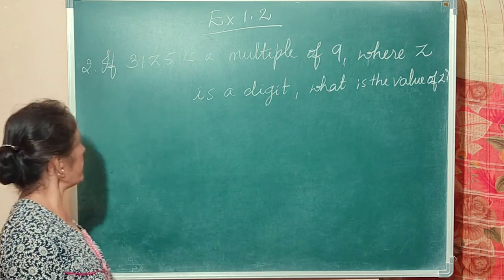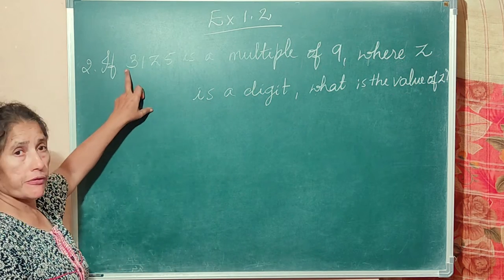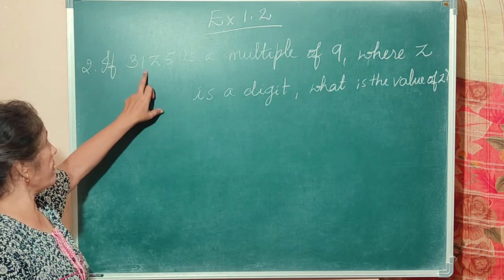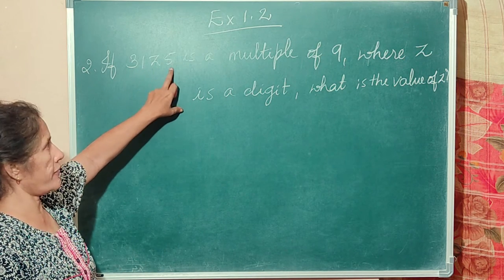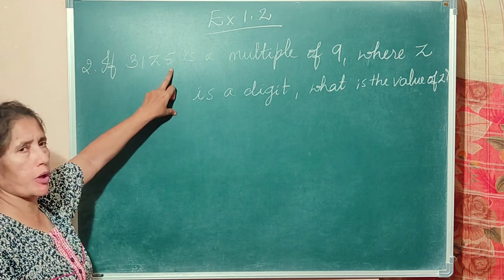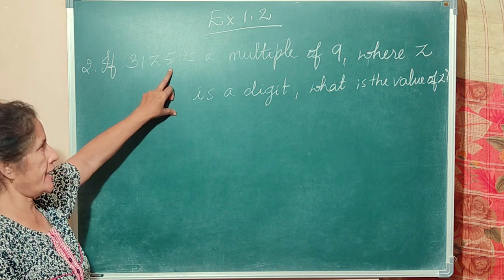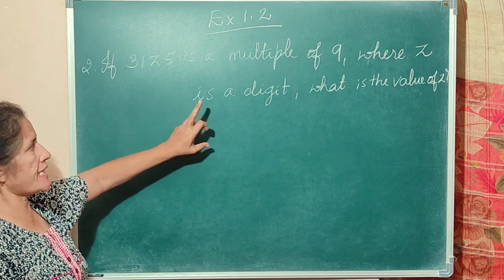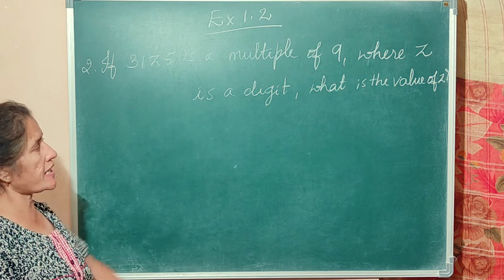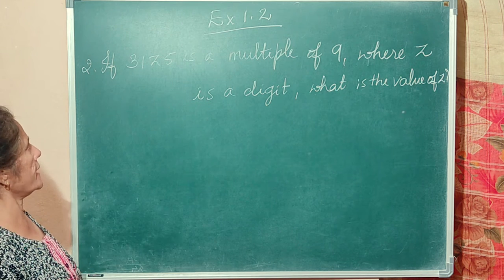Second question: if 31z5 is a multiple of 9, where z is a digit, what is the value of z?